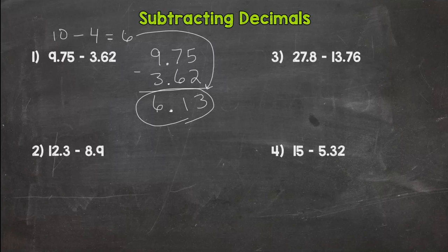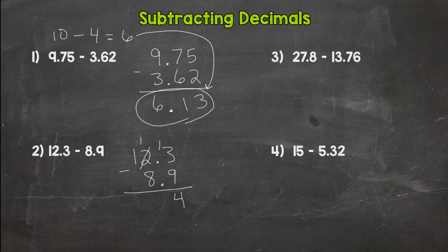Number two: what was the first thing we do when we set up our subtracting decimals problem? Hopefully you thought to yourself, line up the decimals. Now in number two we do not need any placeholder zeros either, but this one's a little different than number one because we cannot do three minus nine, so we need to borrow. We take from the two and get to thirteen minus nine, which is four.